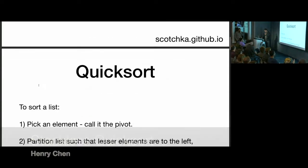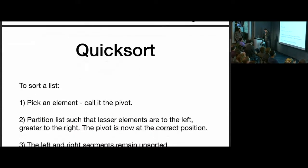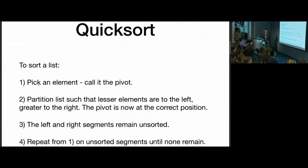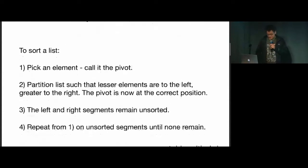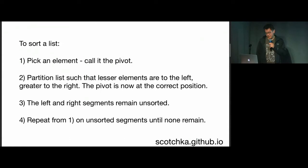So you all probably have heard of QuickSort, and the basic idea is if you want to sort a list, you pick any element — usually it's called the pivot.